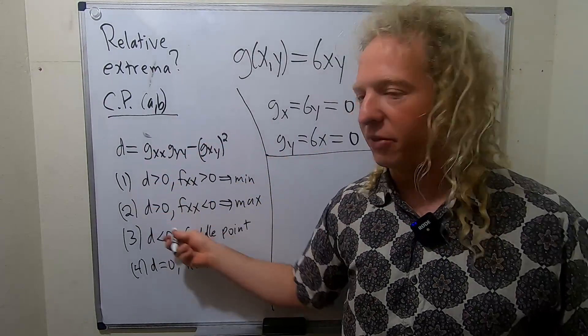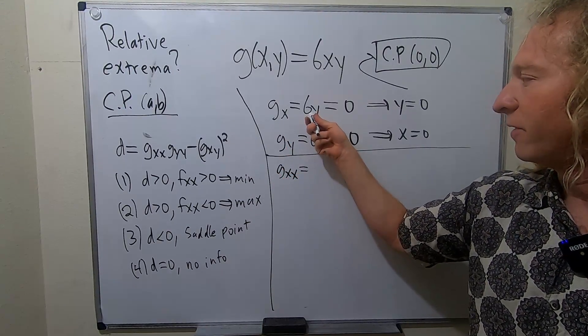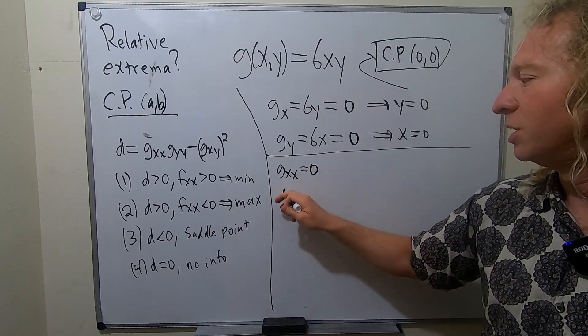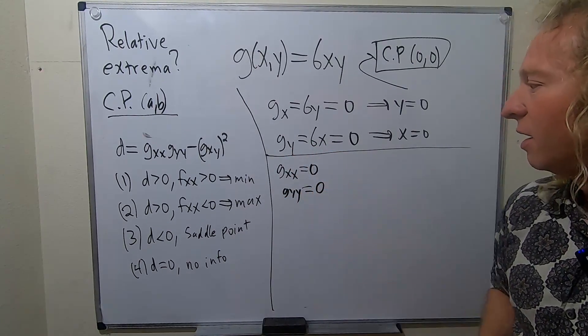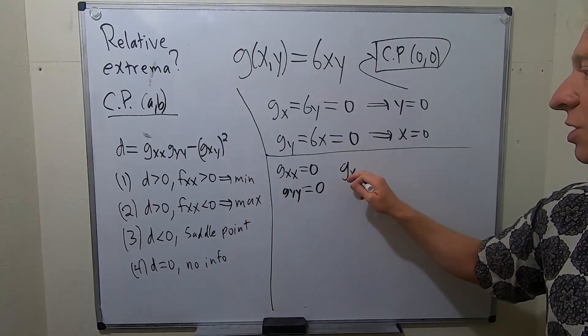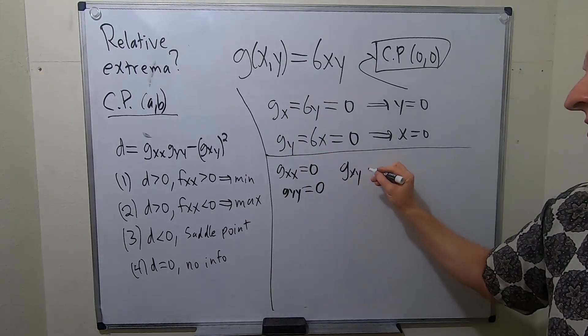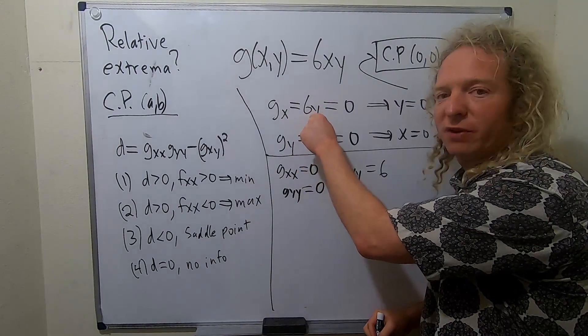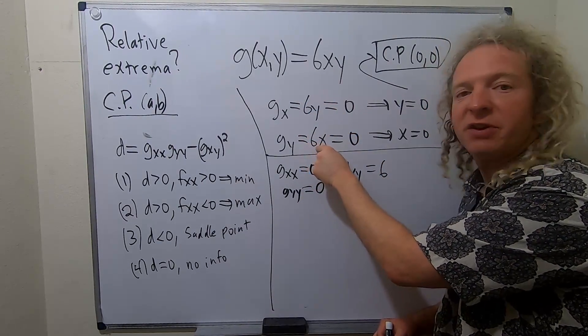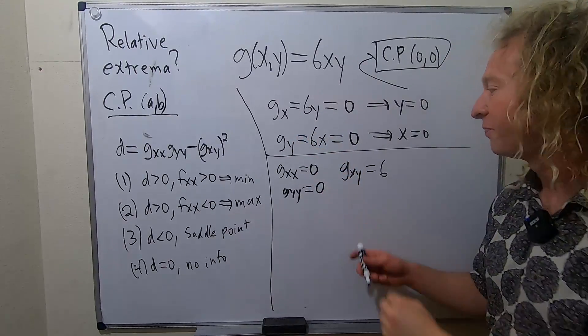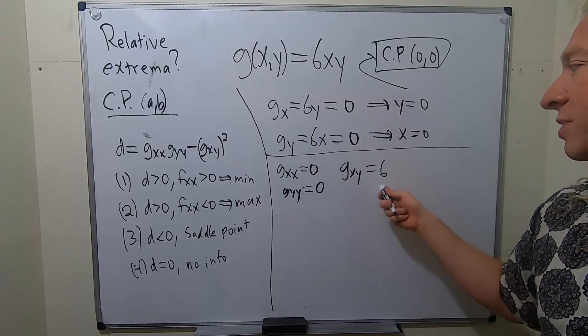Okay, so now we have to figure out this expression D. So GXX, that's just the derivative here. So that's just going to be zero. GYY, that's the derivative here with respect to Y, that's going to be zero. And now we need the mixed partial GXY. So GXY means we look at GX and we take the derivative with respect to Y. So that's going to be six. This one was zero because we took the derivative with respect to X. So Y is a constant, so it goes away. Likewise, this one was zero because we took the derivative of this with respect to Y. X is a constant, so it goes away. This one is six because we took the derivative of this with respect to Y. So the derivative of Y is one, so we just got six.